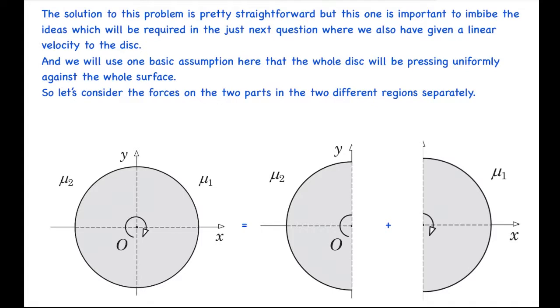We'll use one basic assumption here that the whole disc will be pressing uniformly against the whole surface which means that the normal force per unit area on the disc will be constant. So let's consider the forces on the two parts in two different regions separately.